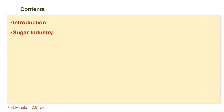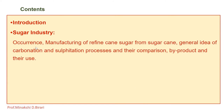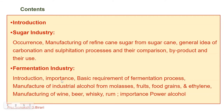In this chapter we have to study the sugar industry and fermentation industry. It includes subtopics like occurrence of sugar industry, manufacturing of refined cane sugar from sugarcane, a general idea of carbonation and sulfatation processes, their comparison, byproducts and uses. We also study the fermentation industry, which includes introduction, importance, basic requirements of fermentation process, manufacture of industrial alcohol from molasses, fruits, food grains, and ethylene, and manufacturing of wine, beer, whiskey, rum, etc., and the importance of power alcohol.